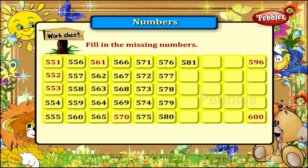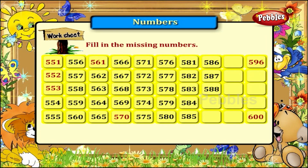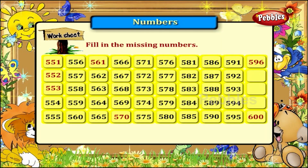581, 582, 583, 584, 585, 586, 587, 588, 589, 590, 591, 592, 593, 594, 595. Five hundred and ninety six is given here. Next comes five hundred and ninety seven, five hundred and ninety eight, five hundred and ninety nine and six hundred is already here.